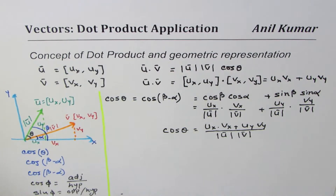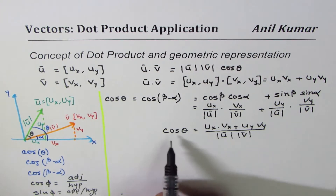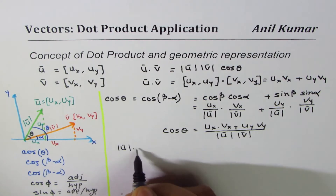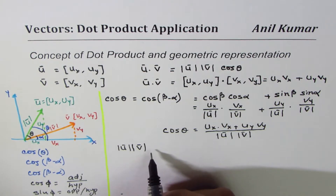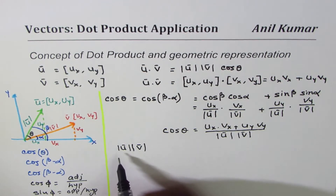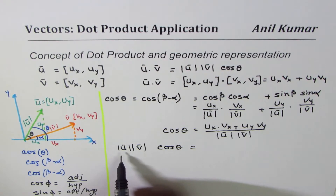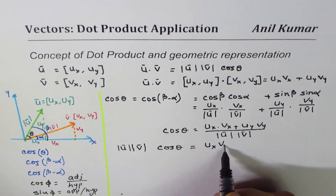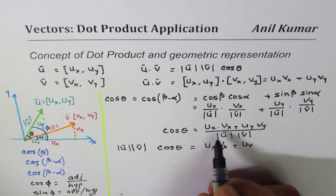All of this equals cos theta, because cos(beta minus alpha) is cos theta. Now if I cross multiply, I get magnitude of u times magnitude of v times cos theta equals ux*vx plus uy*vy. Note that the dot between two scalars here is simple multiplication, not a dot product — dot product is always between two vectors.